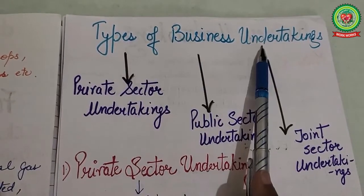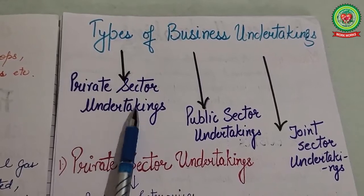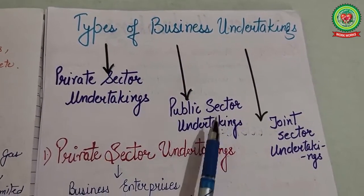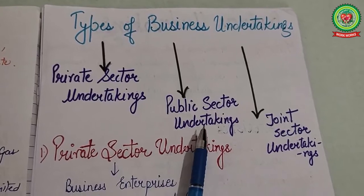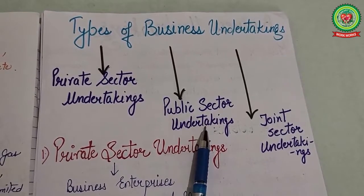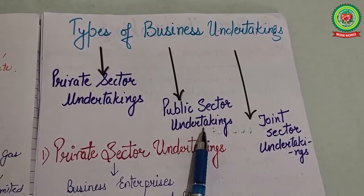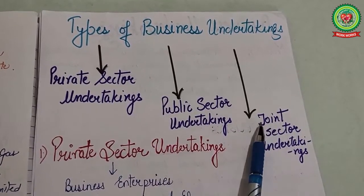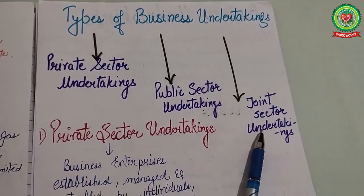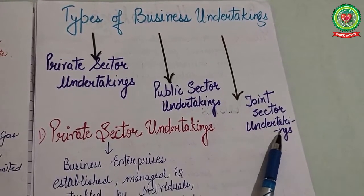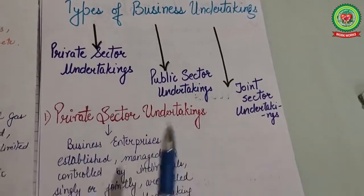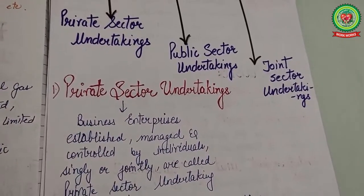Next are the types of business undertakings. The first is private sector undertakings, for example Reliance Industries. Second is public sector undertakings, such as Railways, which are controlled or owned by the government. Third is joint sector undertakings, such as Maruti Udyog Limited, which is jointly owned by the government and private individuals.